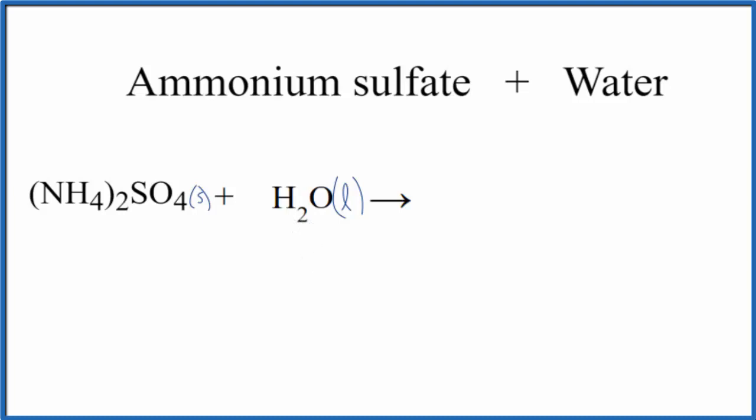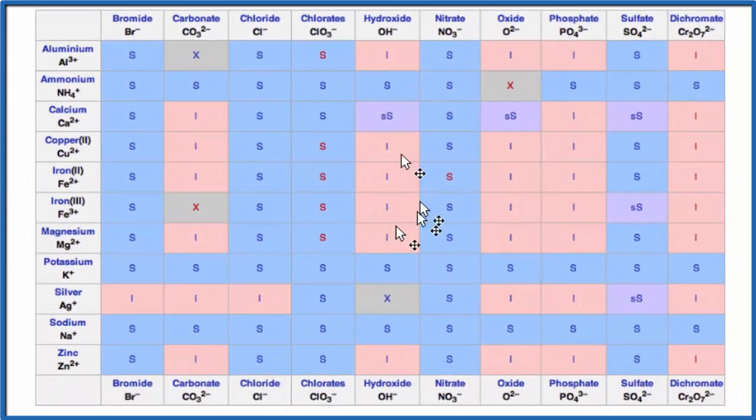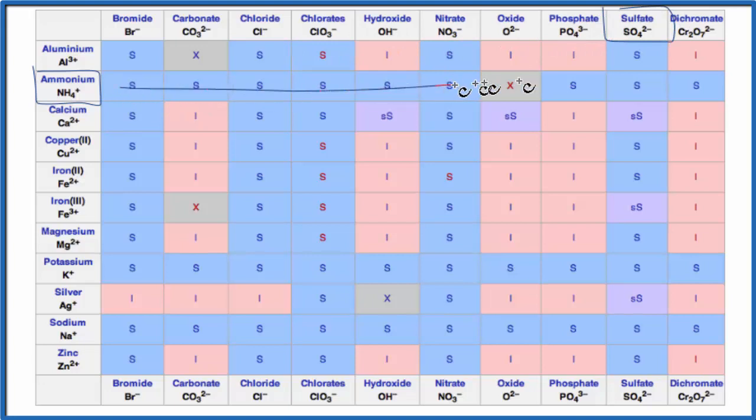We could also look at a solubility chart and just confirm that. So we have our solubility chart, we find the ammonium ion, NH4 plus, and we're looking for the sulfate. Across the top, here's the sulfate. So we go over and down, and that S means that ammonium sulfate is soluble in water. It's going to dissolve in water.